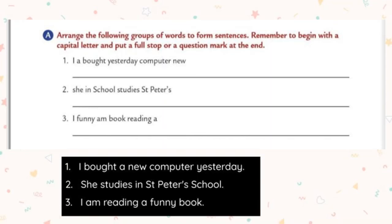The fourth one — the words given are not a complete sentence. We arrange them in proper order with W in capital at the start. End of the sentence, put a full stop because it is a normal statement giving information. If it is a question, you should put a question mark at the end of the statement.